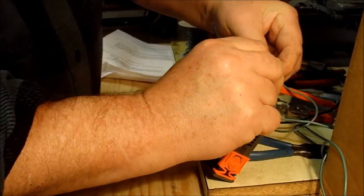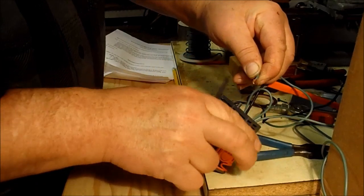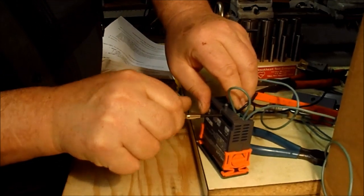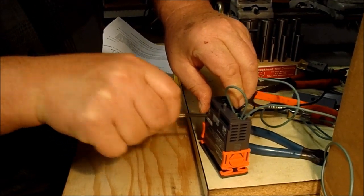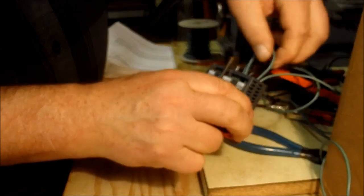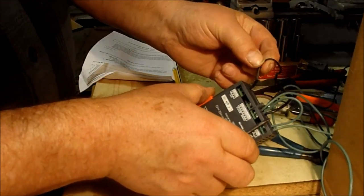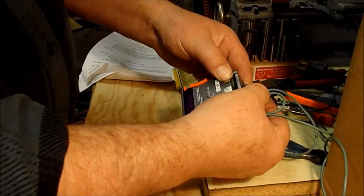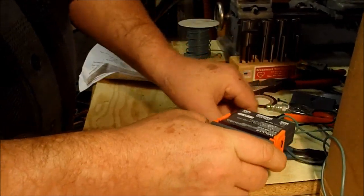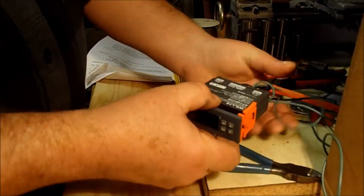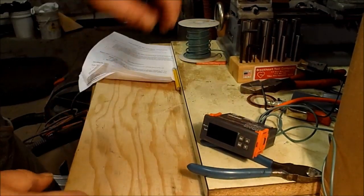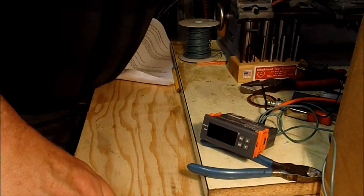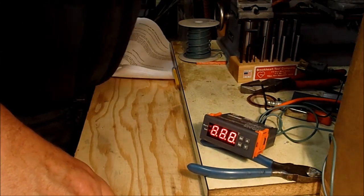Put these two wires in the terminal block and tighten it up. Okay, now this is the temperature probe switch and power unit. Now plug it back in, apply power to it. Stand back in case it smokes. Everything's working good.